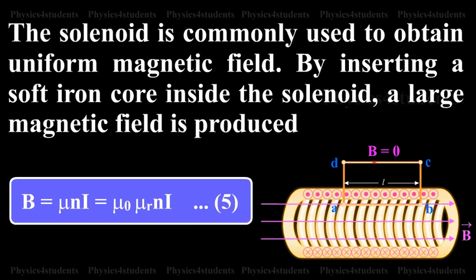The solenoid is commonly used to obtain uniform magnetic field. By inserting a soft iron core inside the solenoid, a large magnetic field is produced. B equals mu into N into I equals mu naught mu R N I. This is equation number 5.